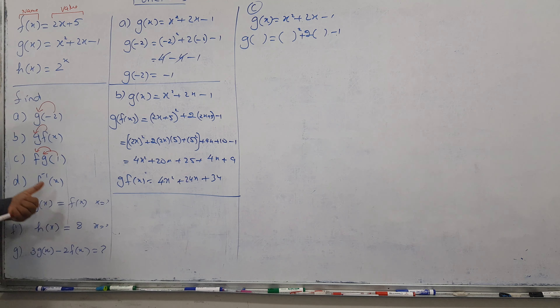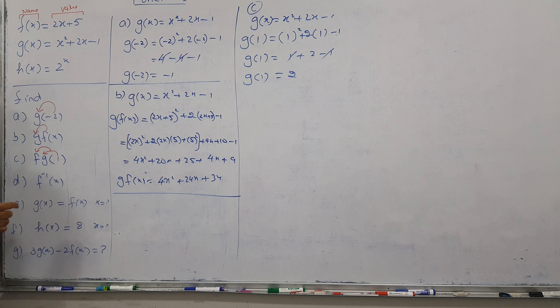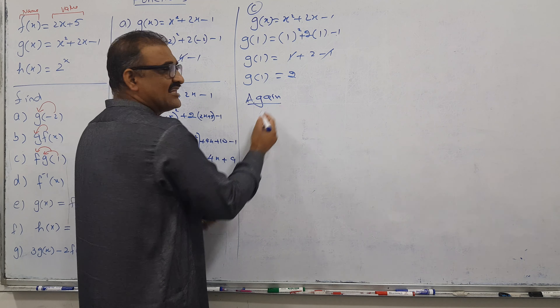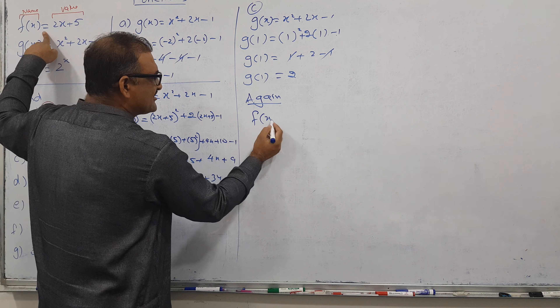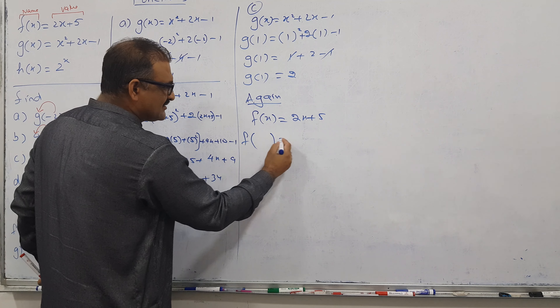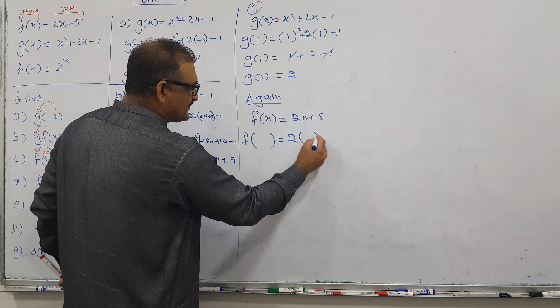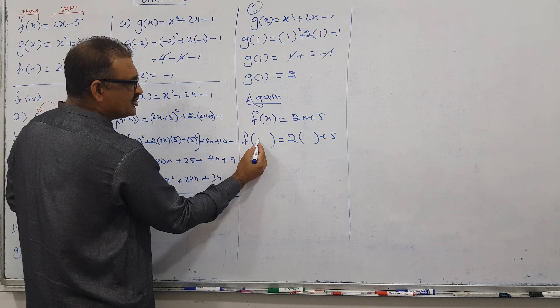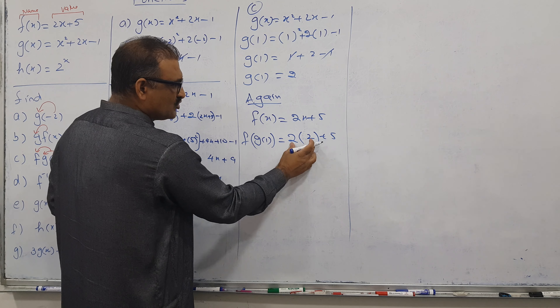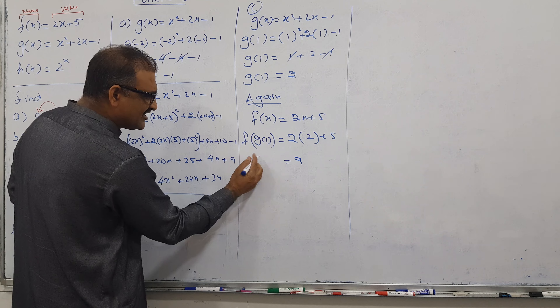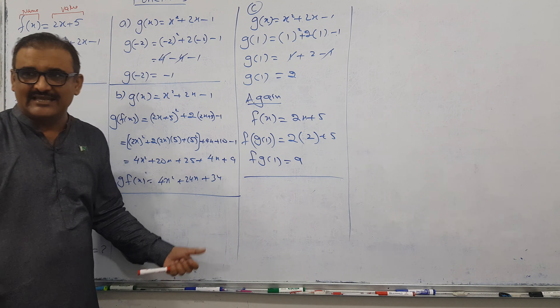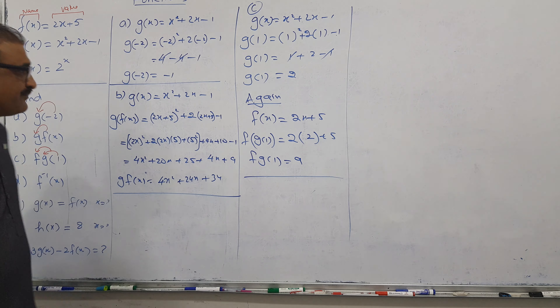Replace every X with 1: one squared plus 2 times 1 minus 1, which gives 1 plus 2 minus 1 equals 2. So G of 1 equals 2. Now put this result into F. Copy F of X: 2 times X plus 5. Write the function name — G of 1 — and its value, which is 2, inside. So we get 2 times 2 plus 5 equals 4 plus 5 equals 9. Part C answer is 9.